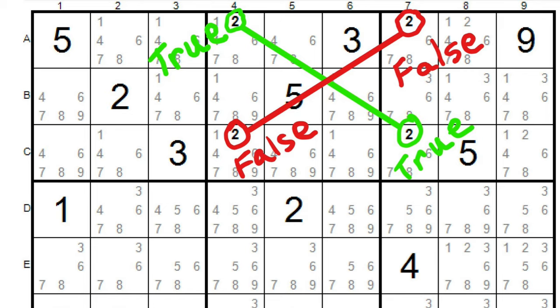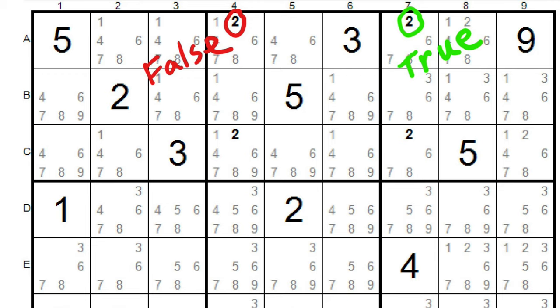However, if row A, column 4, is not a two, then the two in the same row, column 7, must be true. And therefore, the two in column 4 must be in row C. And this forms the other wing of the X, which is why it's called an X-wing.